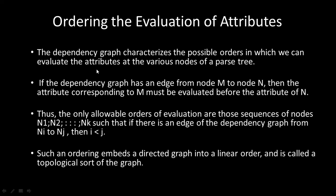If the dependency graph has an edge from node M to node N, then the attribute corresponding to M must be evaluated before the attribute of N — meaning M has a higher priority than N. We write the sequence of nodes for the dependency graph, and the only allowable evaluation orders are sequences of nodes N1 to Nt such that if there is an edge from Ni to Nj, we find the path from bottom to top. Such an ordering is called a topological sort.